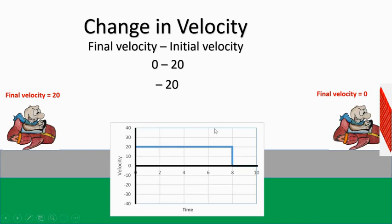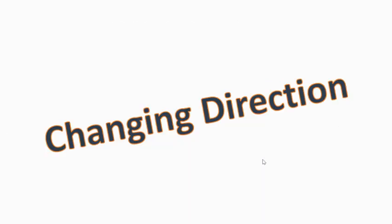On the velocity graph, you'll see that for some time his velocity was 20, then he crashes into the wall and it comes down to zero — a drop of 20. That makes sense: you have a negative number and you see a drop on the velocity graph.